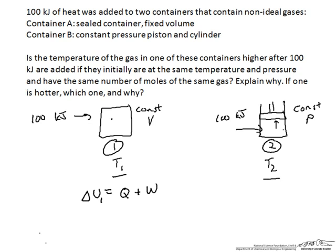In system 1, no work is done. There are no moving parts, no expansion or contraction because it's constant volume. The work is zero and therefore ΔU₁ equals this 100 kJ of heat that we've added. That heat entirely goes to raising the internal energy of the system.